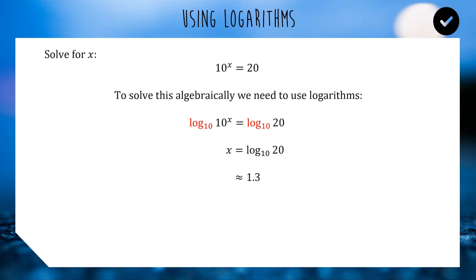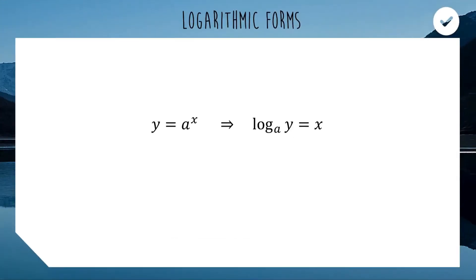We need to solve exponential equations where the answer might not be very nice. So, logarithmic form — another way of writing y equals a to the power of x. This equation can be rearranged using logarithms. If we took both sides and applied log base a, on the left we'd get log base a of y. On the right, log base a cancels out the 'a to the power', leaving us with x.